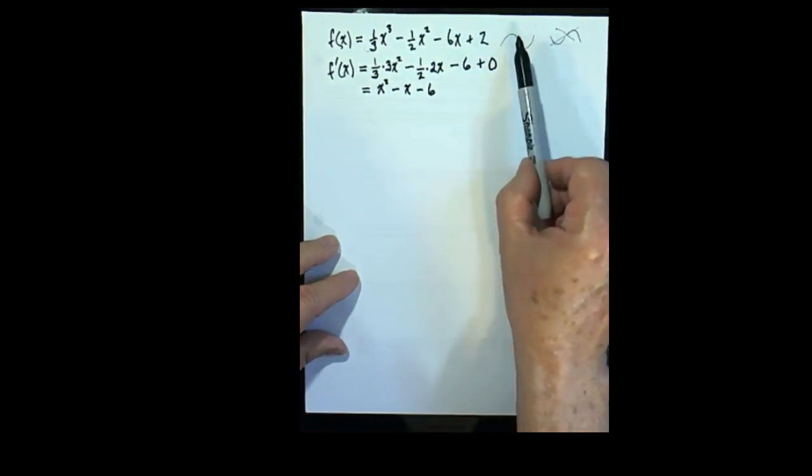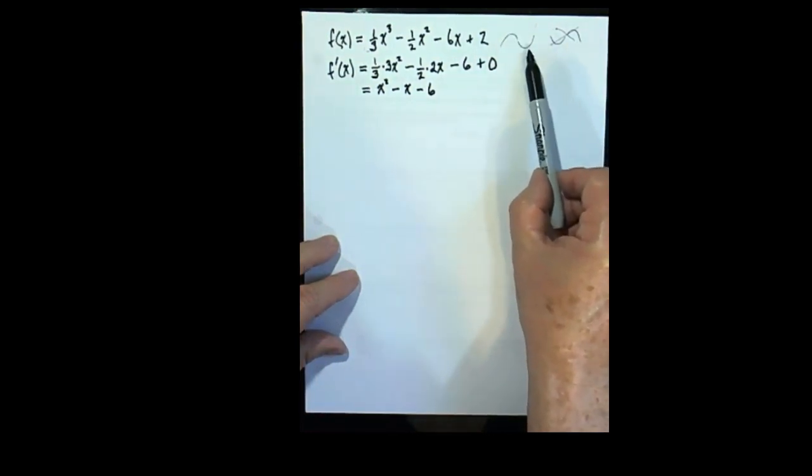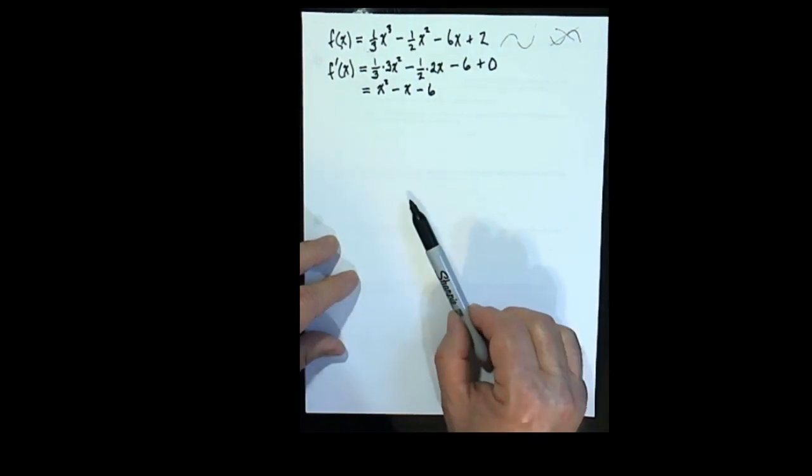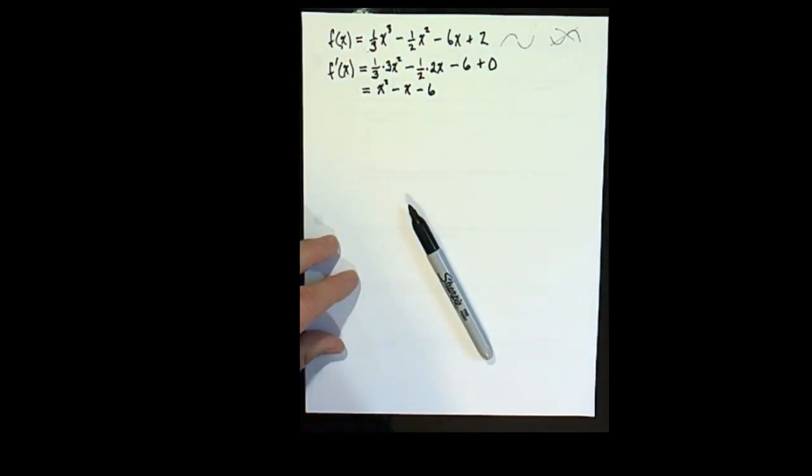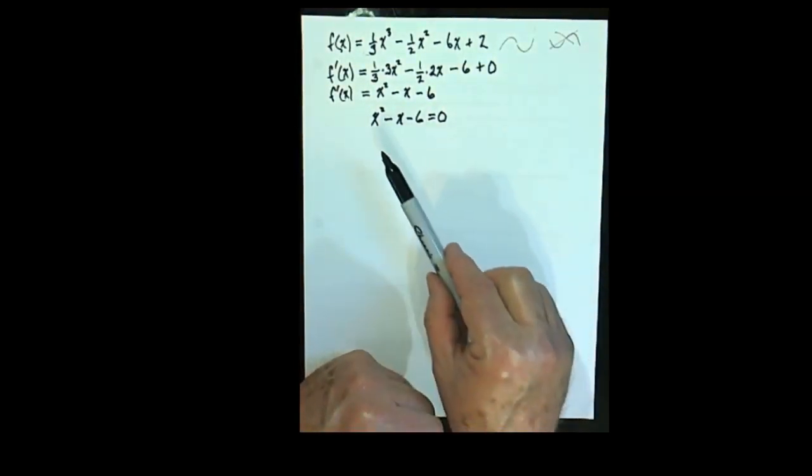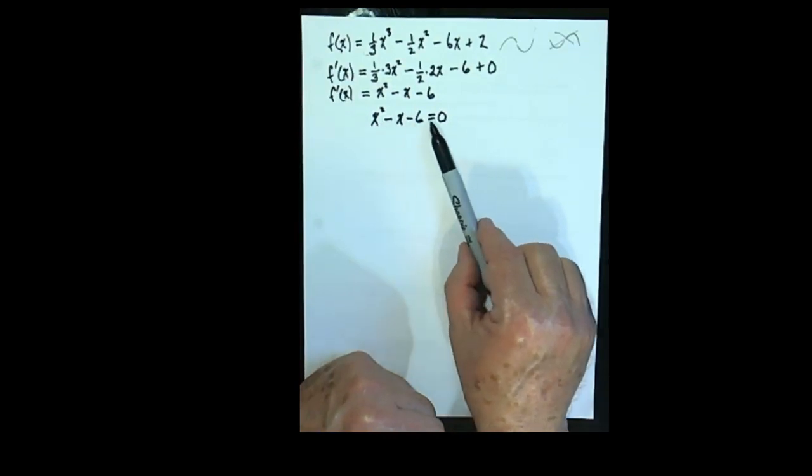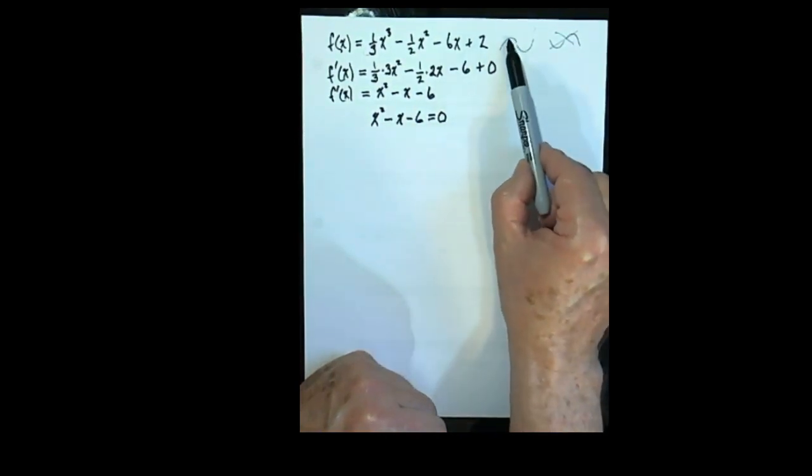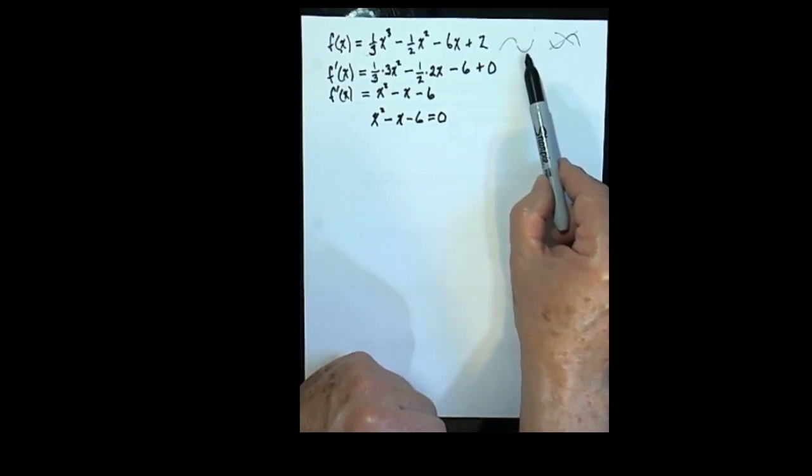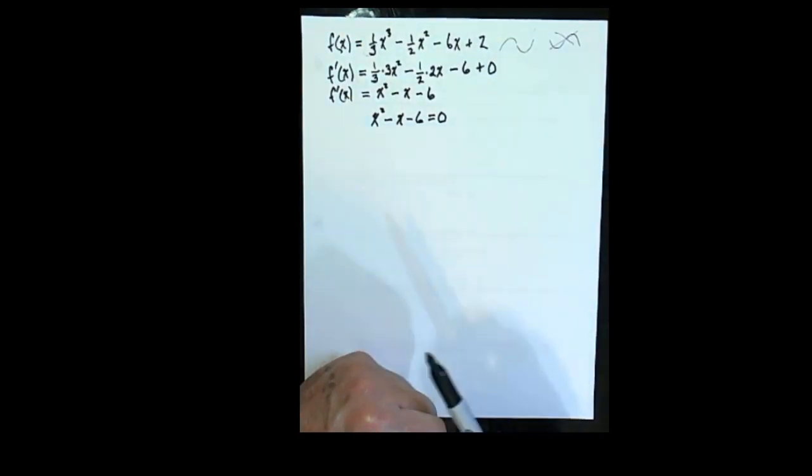Now if we're interested in finding these x values that happen to have the derivative being equal to 0, those are called critical values, and they'll be very useful in graphing this function. So we're interested in knowing when the derivative x squared minus x minus 6 is equal to 0, so that we'll know the x value where we're at this high point and this x value where we're at this low point.